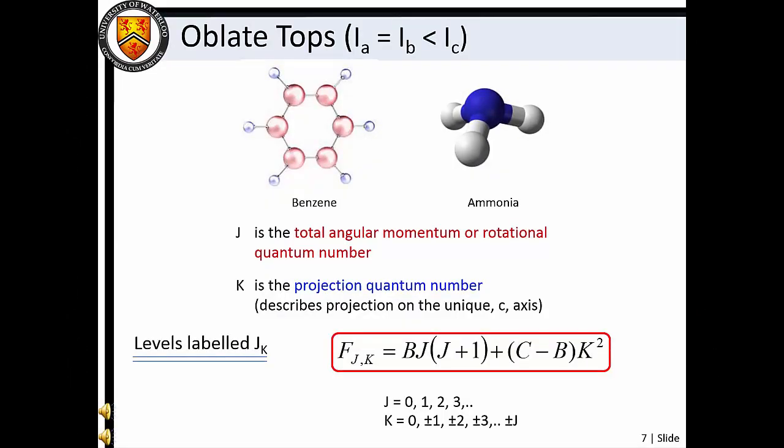The description for oblate tops is very similar to that of prolate tops. For oblate tops, both J and K quantum numbers are needed for a unique description of the rotational motion, and energy levels are again labeled as J_K. Each J level has a 2J+1 degeneracy under field-free conditions, and each K level with K greater than zero is doubly degenerate. In this case, the unique rotational axis is the C axis, and the unique rotational constant is the C constant.